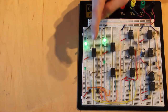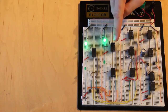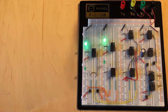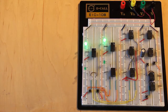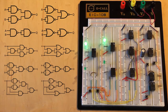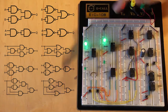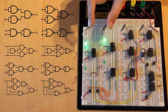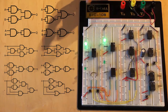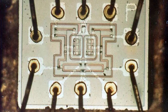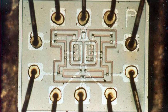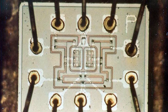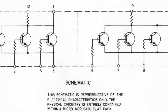Both the NOR gate and the NAND gate are unique among the six gates because they are universal gates — you can make any other logic gate out of just NAND gates or just NOR gates. For example, the Apollo guidance computer used nothing but NOR gates.